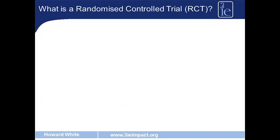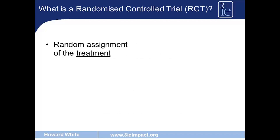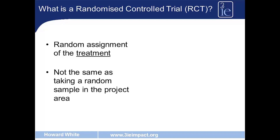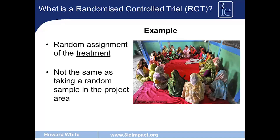What is an RCT? A randomised controlled trial randomly allocates the project, or what we call the treatment, to particular districts, villages, households, firms, schools, or whatever, and randomly assigns others to be in the control group. This is not the same as taking a random sample of those in the project — we mean that who actually gets the project is randomly chosen.